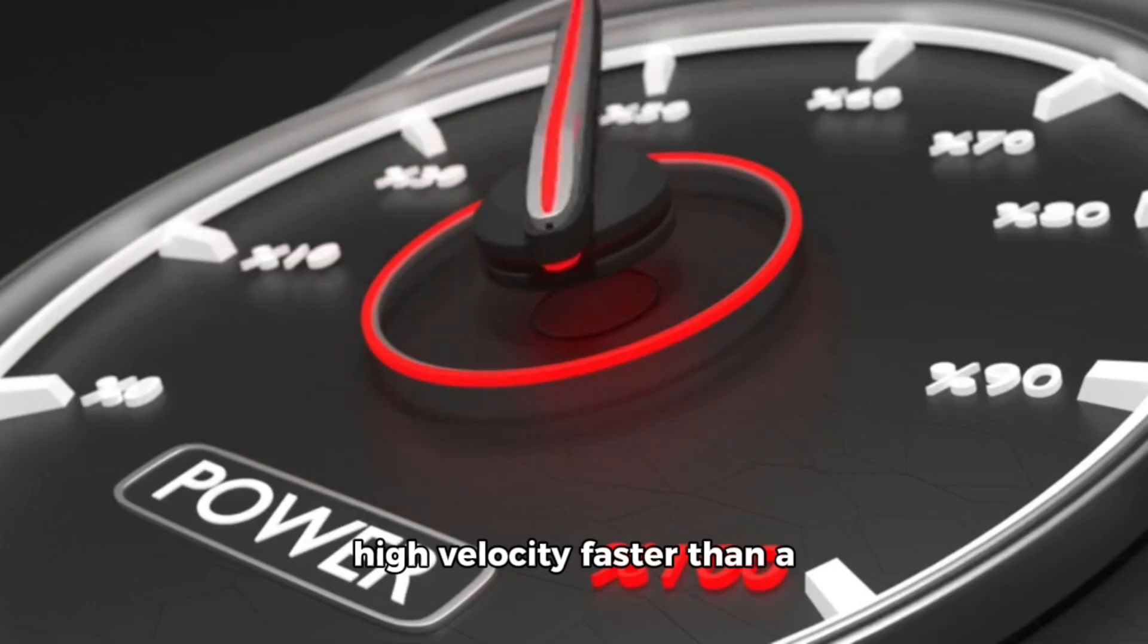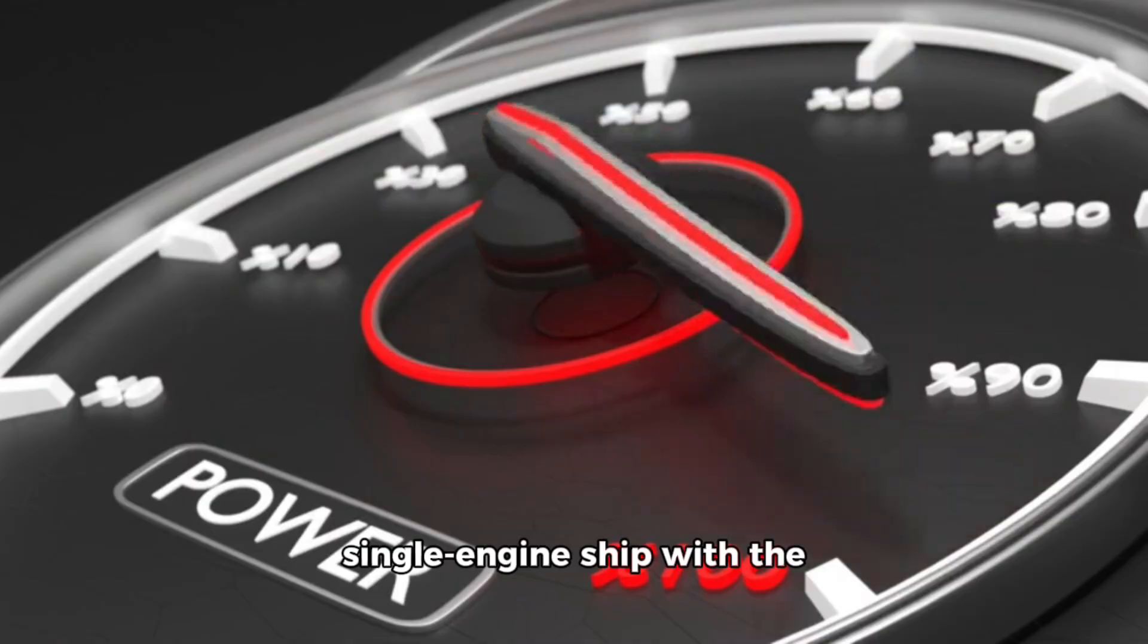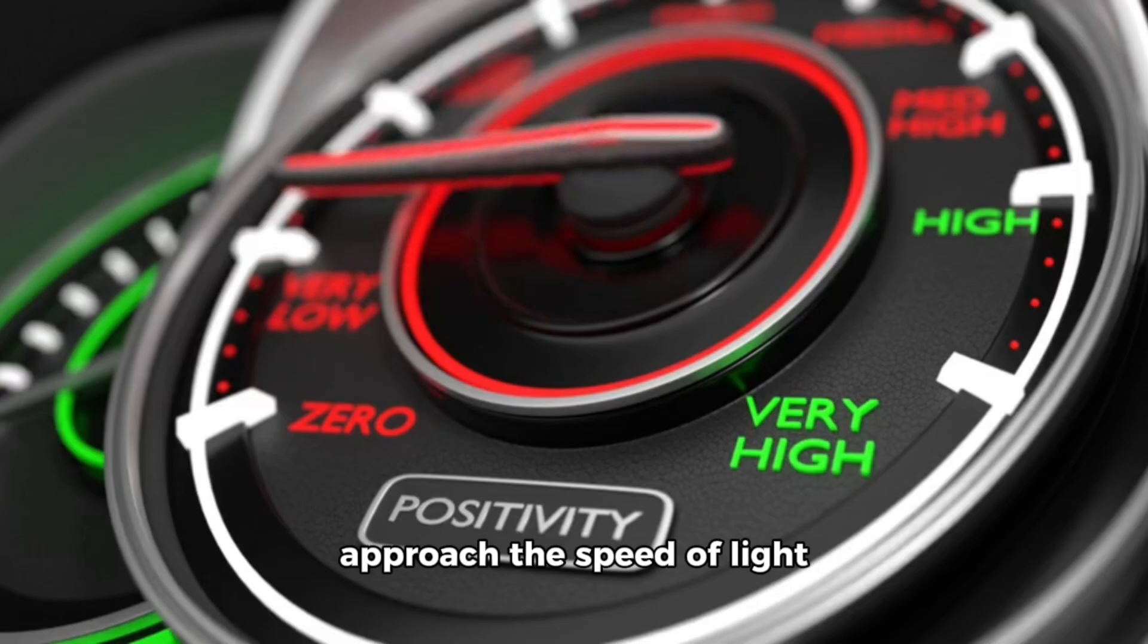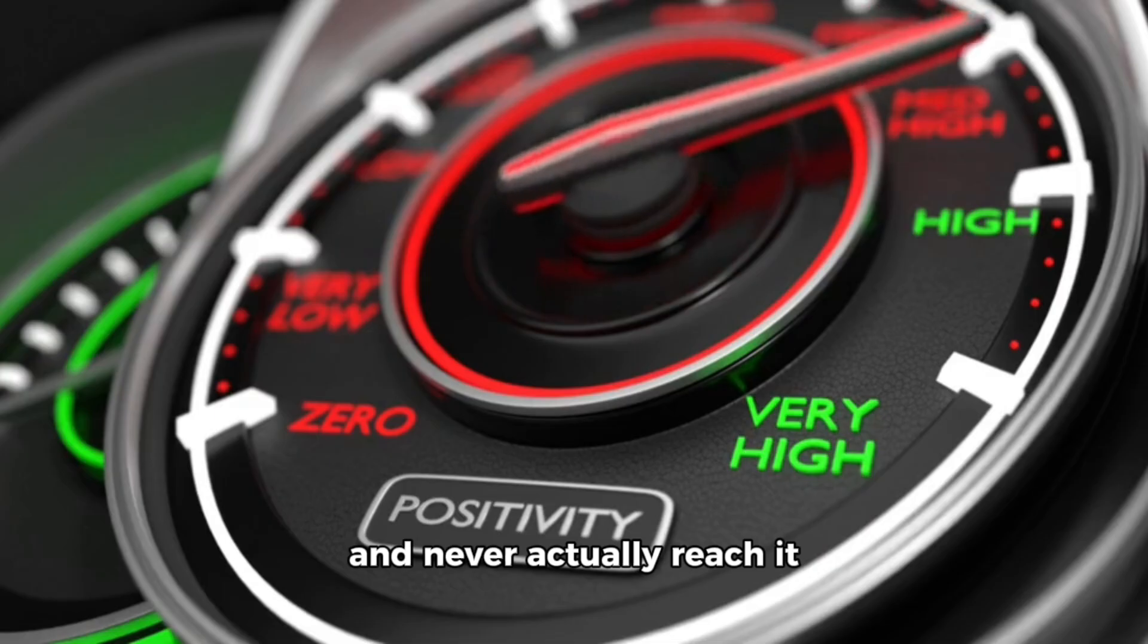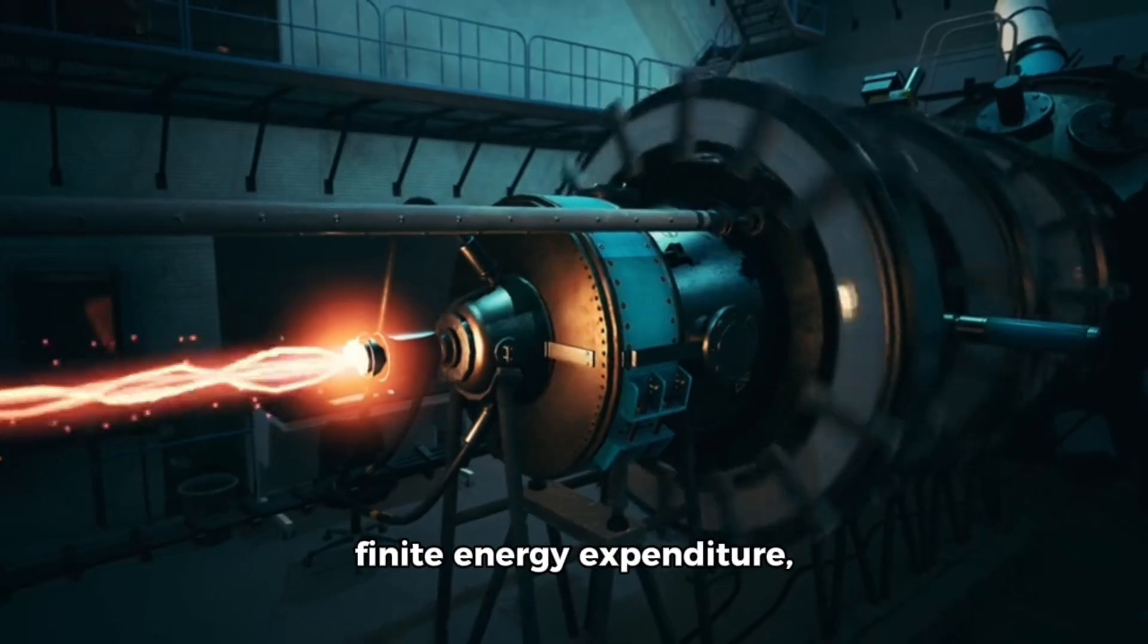So while your twin engine ship would indeed reach a very high velocity faster than a single engine ship with the same individual engine power, it would still asymptotically approach the speed of light and never actually reach it within a finite time and finite energy expenditure.